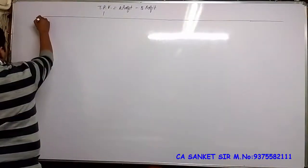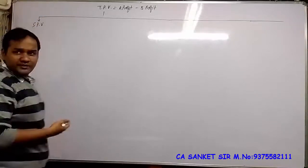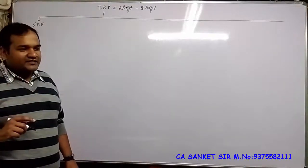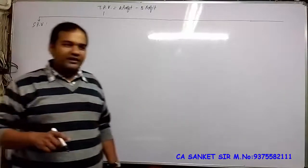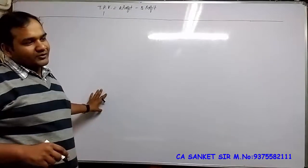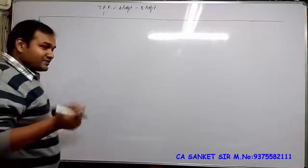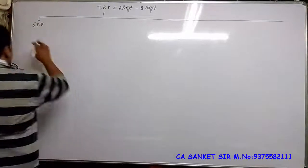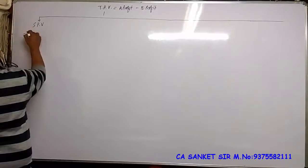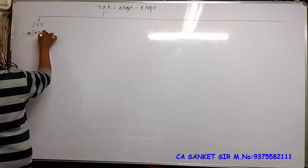The first branch is called Selling Price Variance. This is a variance that is common to both Sales Variance and Profit Variance — the formula is the same used earlier. The formula is: Actual Quantity sold × (Actual Selling Price minus Standard Selling Price).